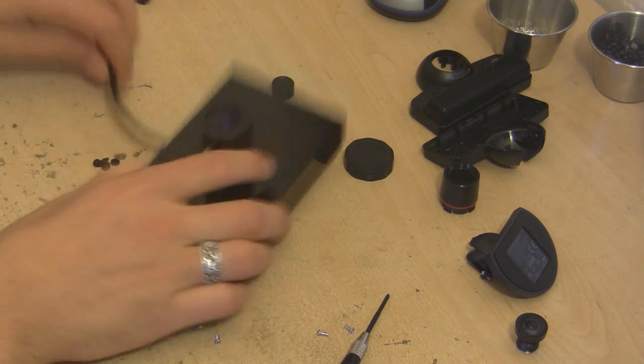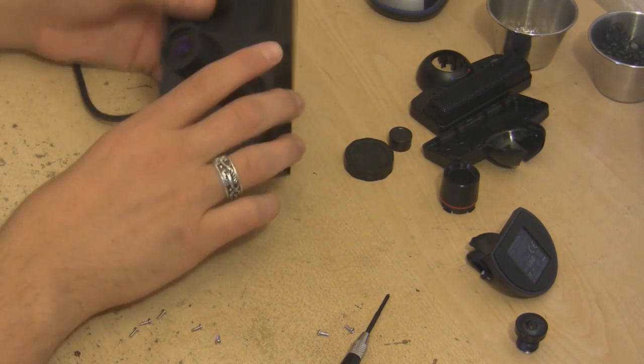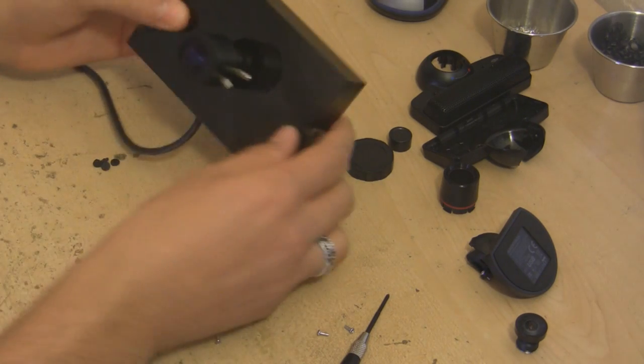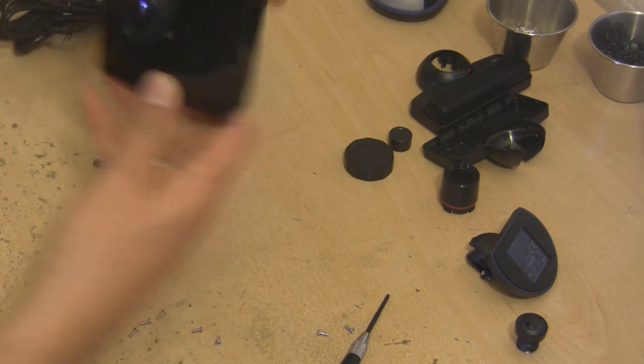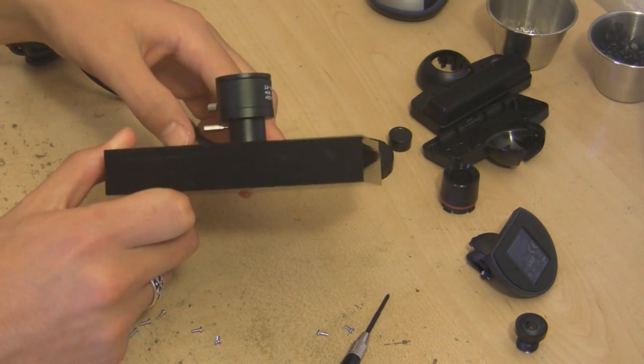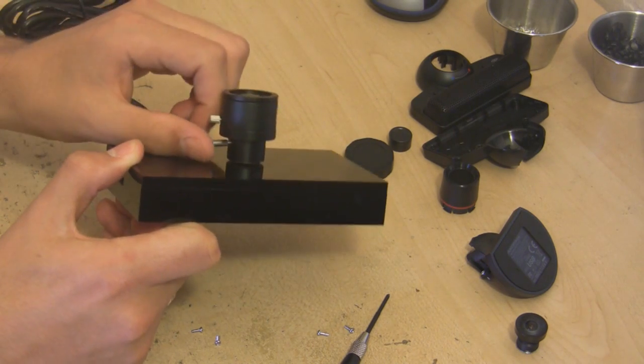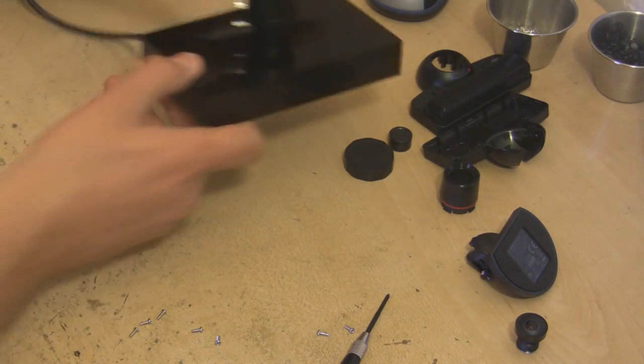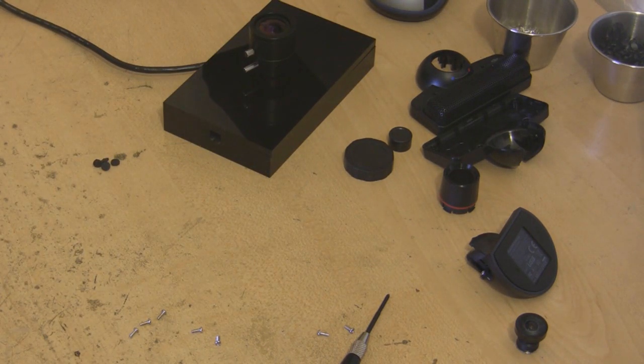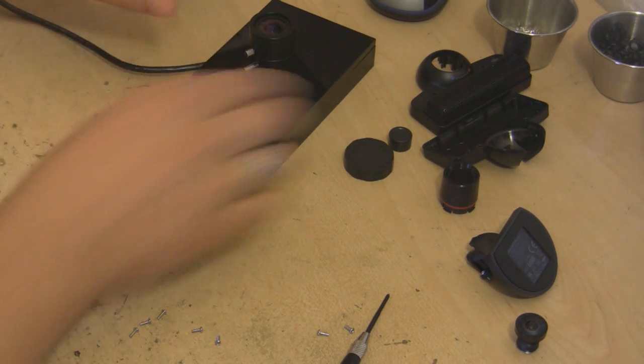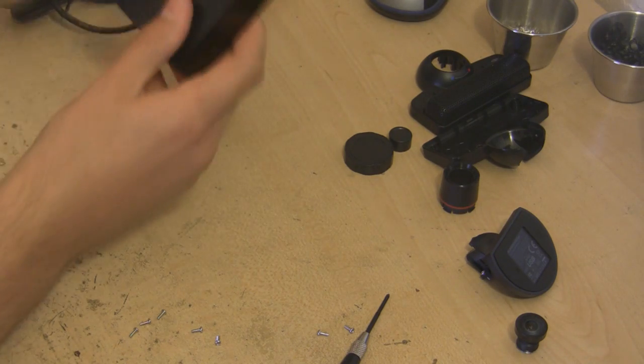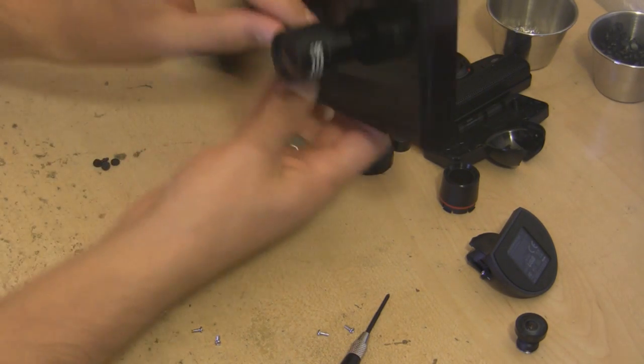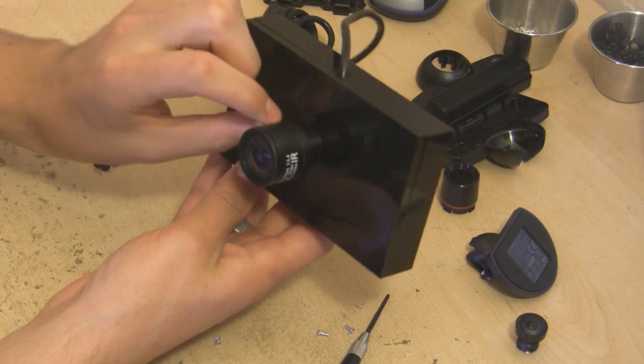Alright, so you can see what the camera looks like. You've got the big lens sticking out of there. You can adjust it like this. Let me turn the video on so you can see what's going on. Let me show you the outside.